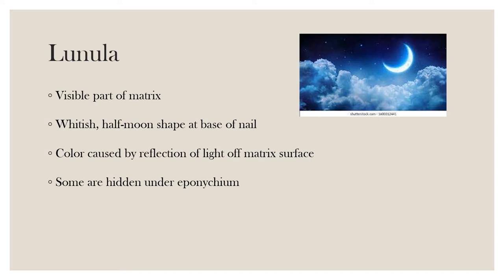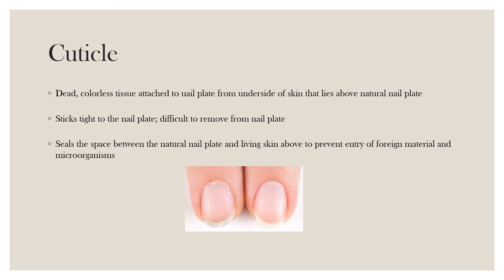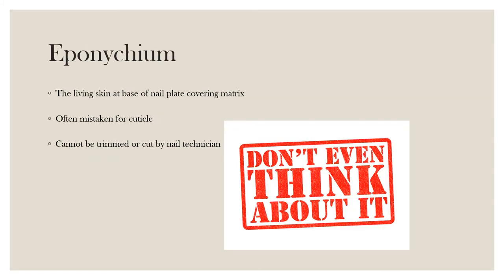The cuticle is the dead, colorless tissue attached to the natural nail plate. It comes from the underside of the skin that lies above the natural nail plate. The tissue sticks tightly to the nail plate and is difficult to remove. Its job is to seal the space between the natural nail plate and the living skin above, to prevent entry of foreign material and microorganisms and to help avoid injury and infection.